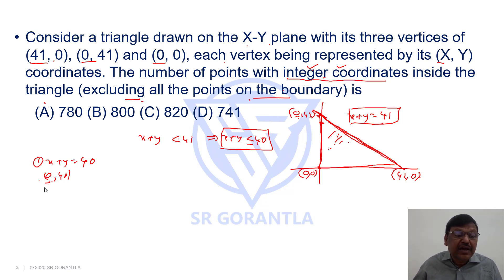Suppose if I take 40 and 0, then it will be here, also on the boundary. We want to exclude the boundary means you can't take x or y as 0. So this is ruled out. So what is the possibility?